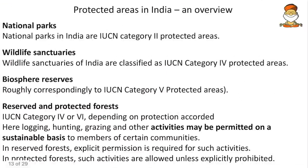Coming to protected areas: national parks are IUCN Category 2 protected areas, designated only by the central government under the Wildlife Protection Act. Their demarcation and declaration is done by the National Board for Wildlife, where the PM is the head.